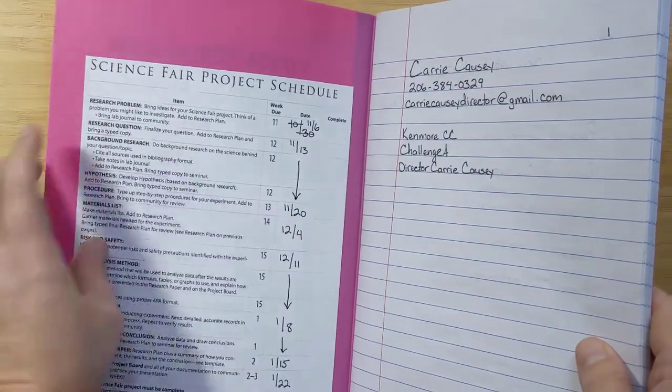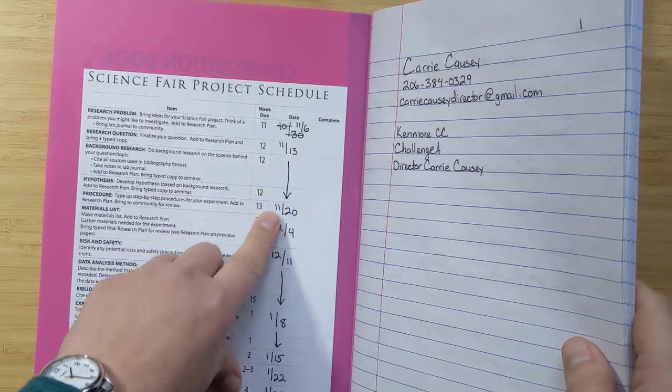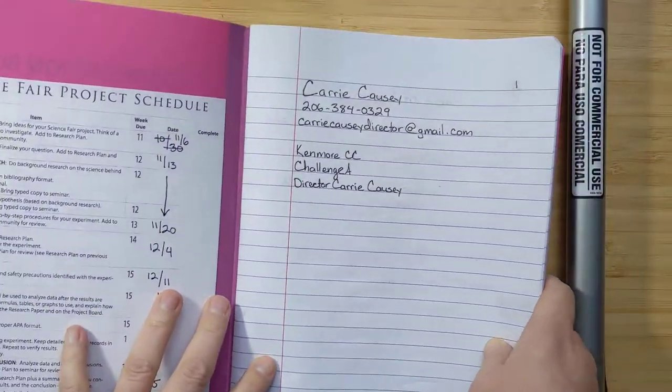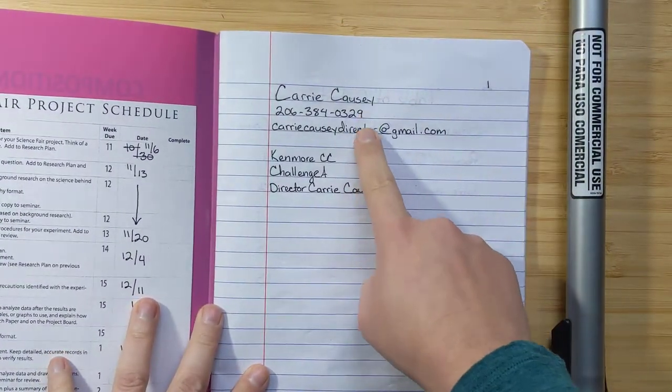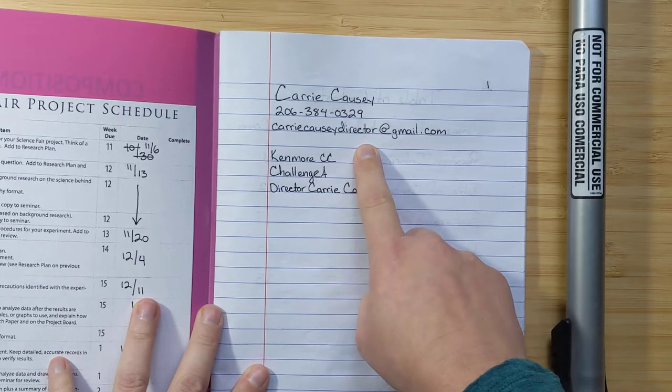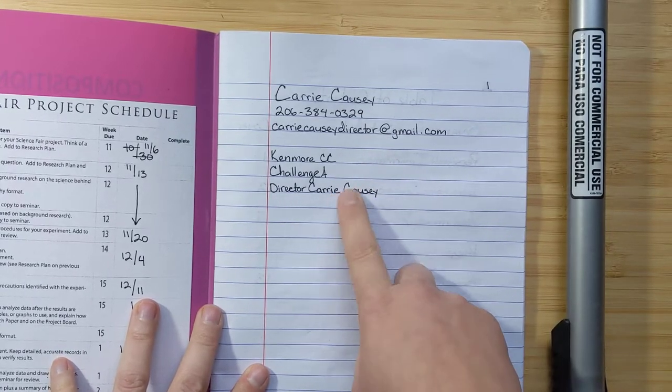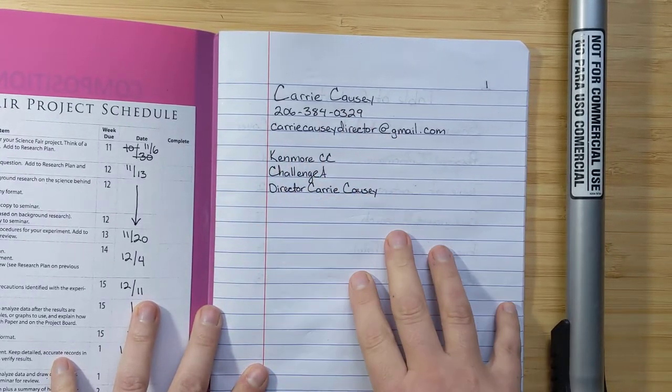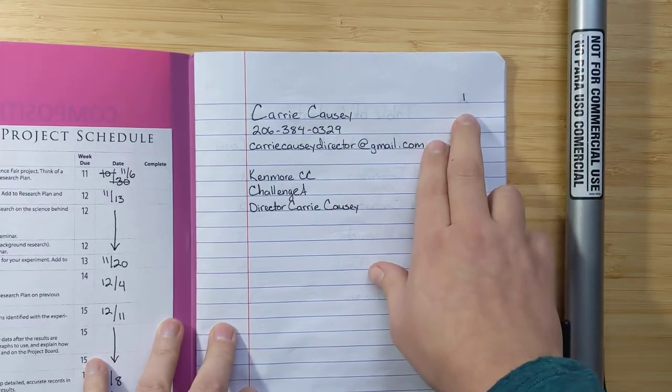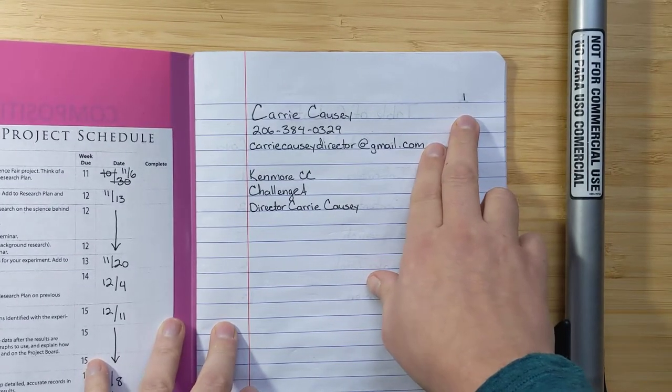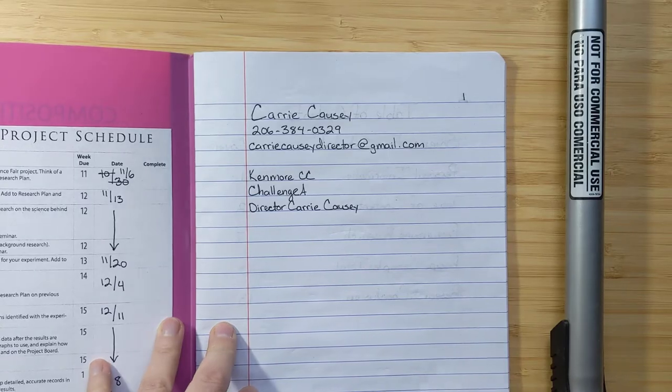And here is my science fair schedule with my crossed out dates and things in it. And together in class, we will put in everyone's name, phone number and email, and our community because that's the required cover stuff. We will also pre number, I don't know, 10 or 12 pages, we won't do the whole book. There's no need to.